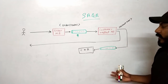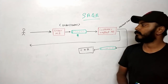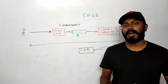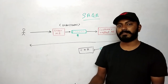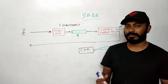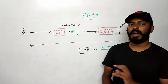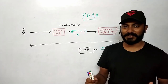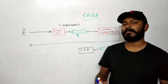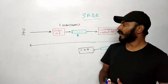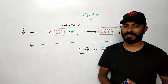The Saga pattern works well and provides complete atomicity in a distributed environment. This video covered different ways of handling transactions in distributed systems — specifically for microservices — including two-phase commit, three-phase commit, and the Saga pattern. If you like this video, please subscribe and leave topic suggestions in the comments.